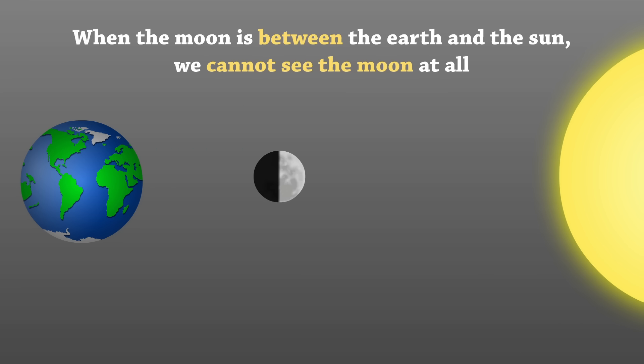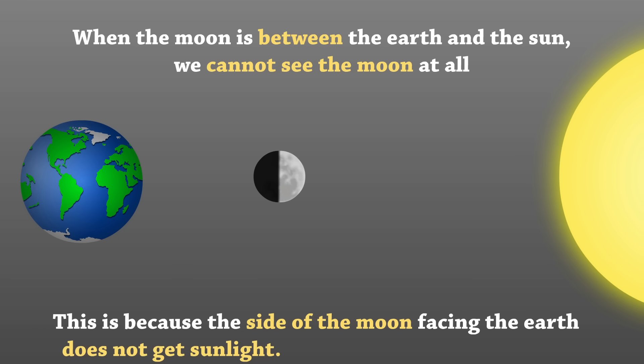When the moon is between the earth and the sun, we cannot see the moon at all. This is because the side of the moon facing the earth does not get sunlight. This is called the new moon.